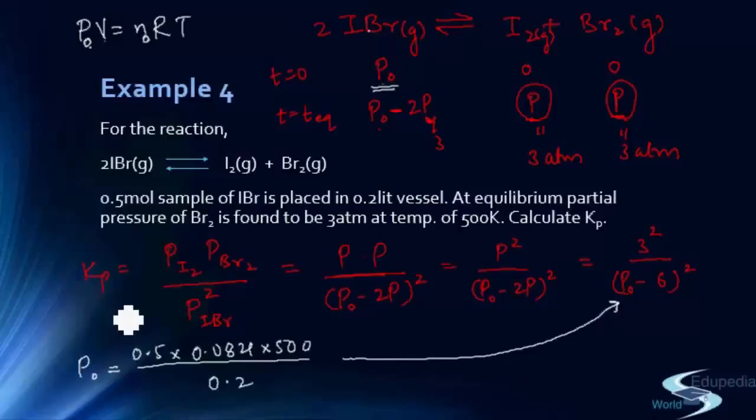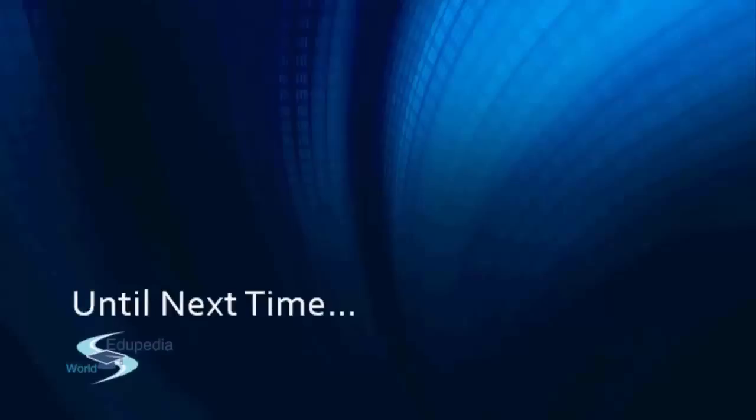These are the typical question formats — sometimes Kp is given and you calculate partial pressure, initial pressure, or moles. In upcoming sessions we will also look at heterogeneous equilibrium and cases where the initial amount of product is not zero, where we use the reaction quotient to determine how the reaction proceeds. Thanks for watching Edupedia World videos.